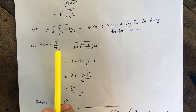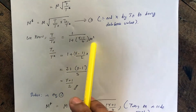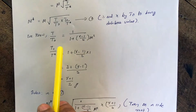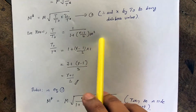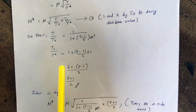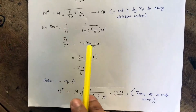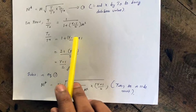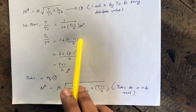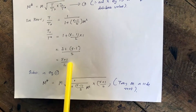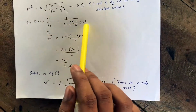Applying the star condition — where M = M* = 1 — to the stagnation relation gives T₀/T* = 1 + (γ−1)/2 × 1² = 1 + (γ−1)/2. Taking the LCM, we get T*/T₀ = 2/(γ+1).